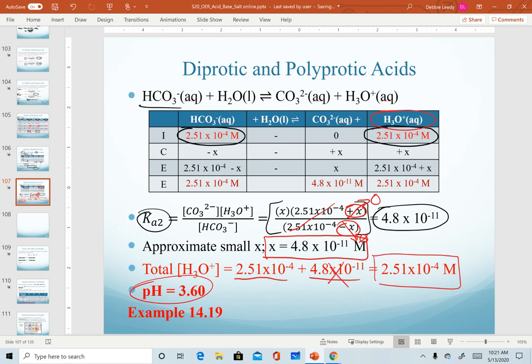So the moral of all of this is that we really only need to set up one ICE table for a diprotic or polyprotic acid. And that's because the second, third, and fourth dissociations would be so small that those hydronium concentrations wouldn't contribute much. So only the first ionization equation contributes appreciable amounts of hydronium.